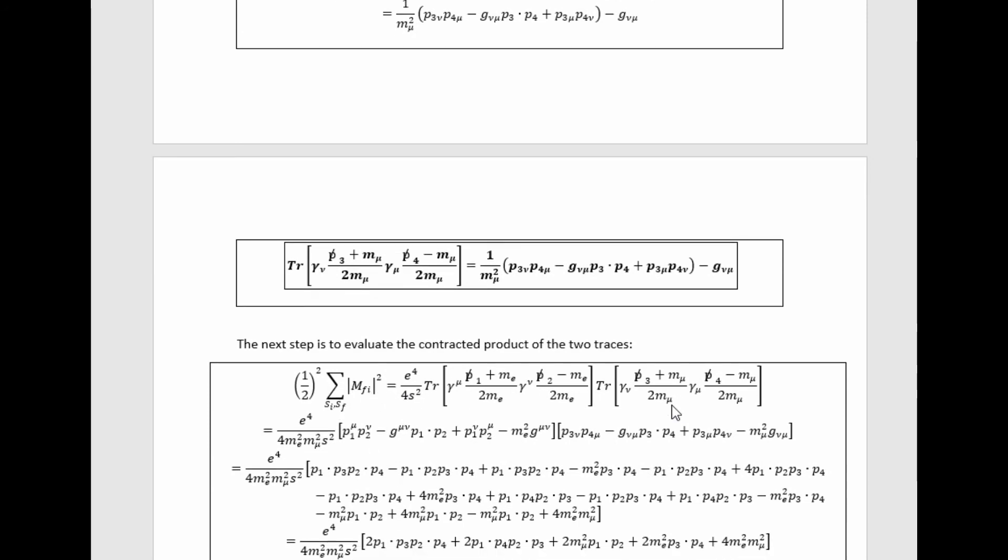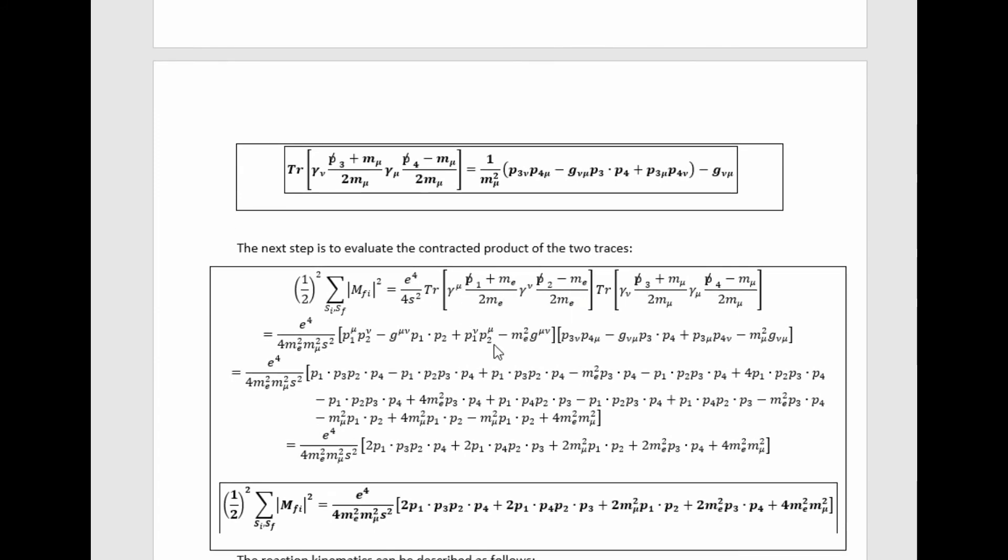And then we need to take the contracted product of those to get the value for this averaged squared Feynman amplitude. So plugging the values in that we just calculated for these two traces and then simplifying ultimately gives this result.